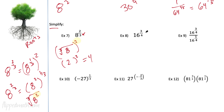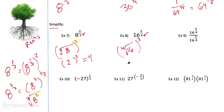Example 8: 16 raised to the 3/4 power. The root is on the bottom, so that's the 4th root of 16, and we need to cube it. What number multiplied 4 times gives you 16? That's 2. So this is going to be 2 to the 3rd power, and that all equals 8.